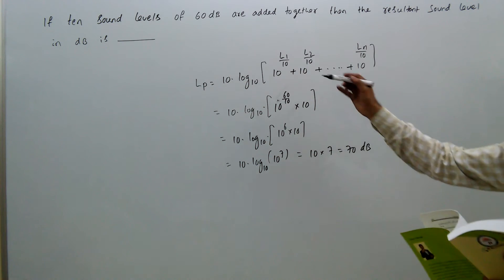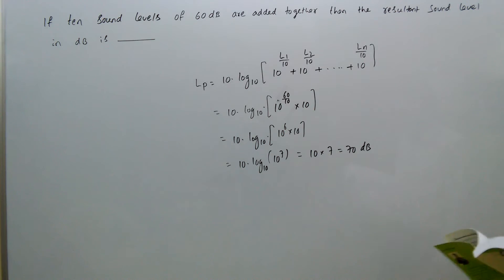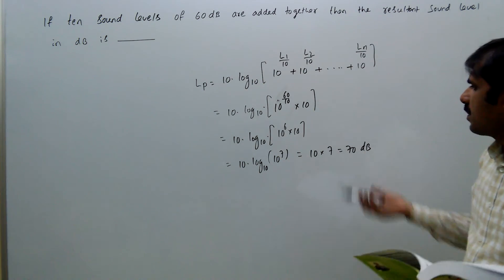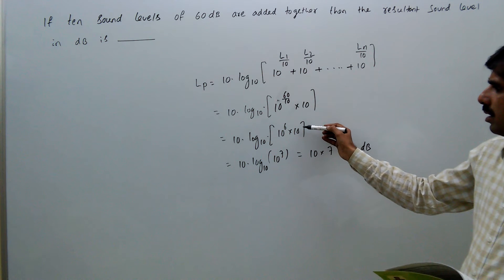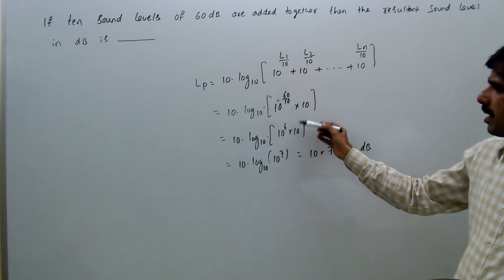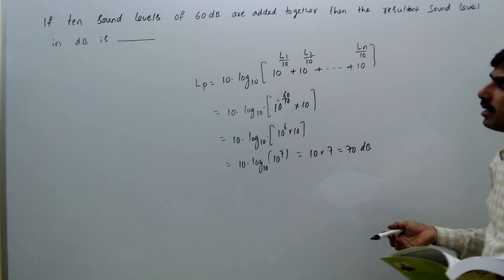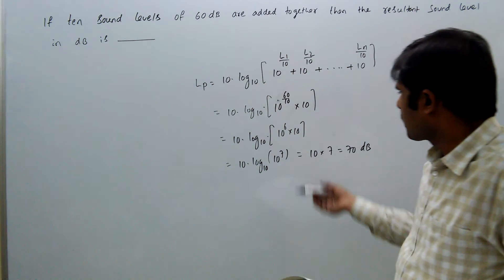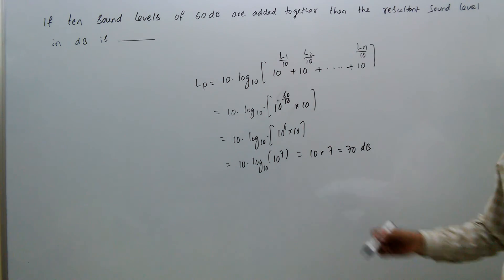So if 10 sound levels of 60 decibels together form 70 decibels sound. Suppose 100 sound levels—then it becomes 80 decibels, because 100 equals 10 squared, so 10^8, then 80. So 10 sound levels of 60 decibels forms 70 decibels sound. The answer is 70.